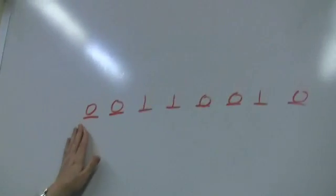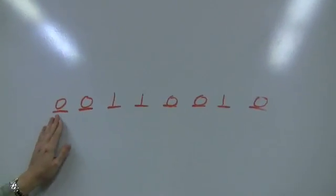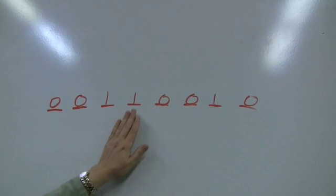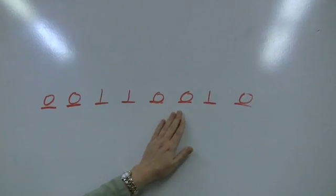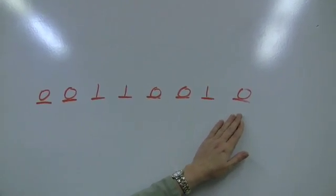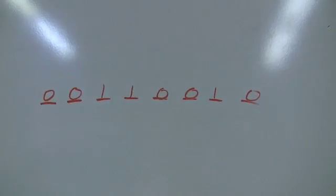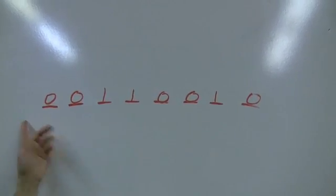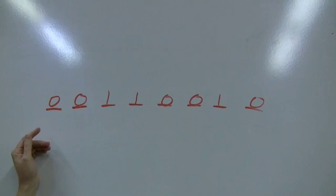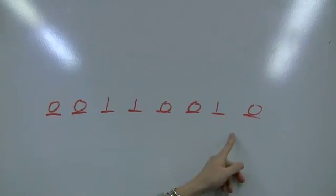So as you can see up on the board, I have the binary number 00110010. Binary is usually written as a byte of information — 8 bits — so I have 8 bits up here.